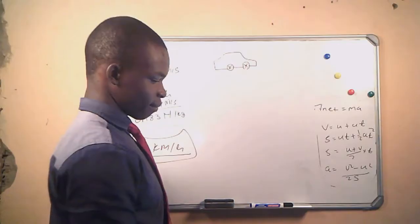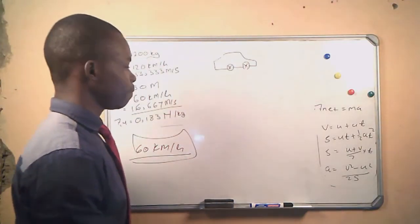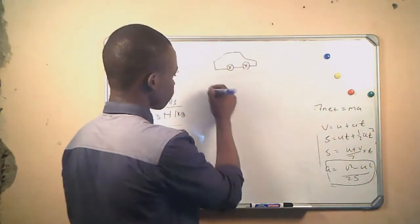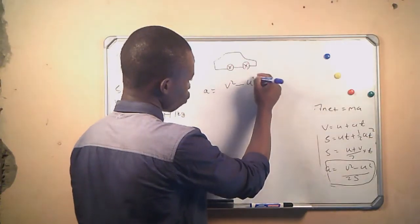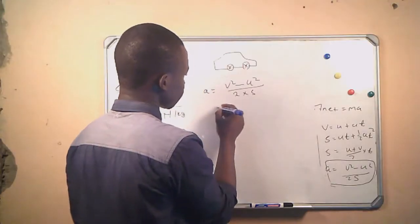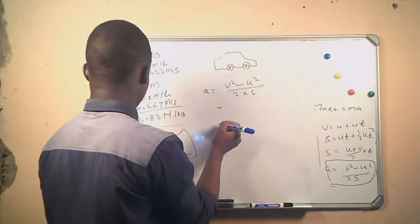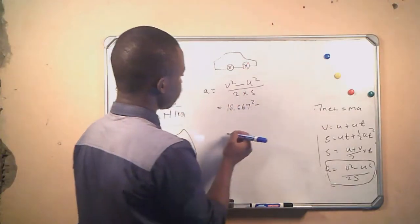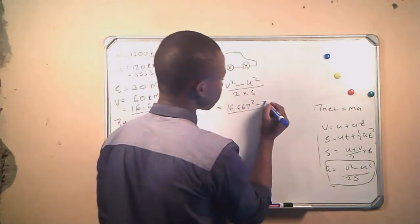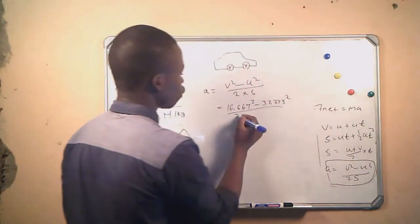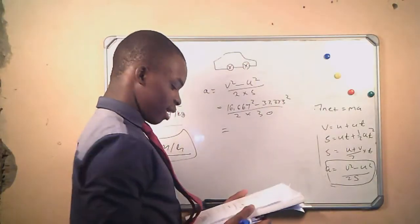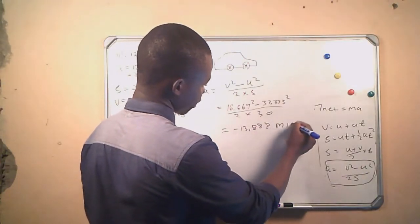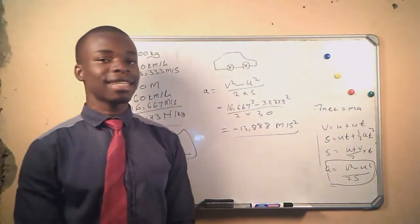For the first question, we determine the deceleration of the car. Since we have everything except acceleration, we use the formula: a = (v² − u²) / (2s). Our final velocity is 16.667 m/s and initial velocity is 33.333 m/s, over 2 times 30 meters. This gives us a = −13.888 meters per second squared. The negative sign tells us that it is a deceleration.